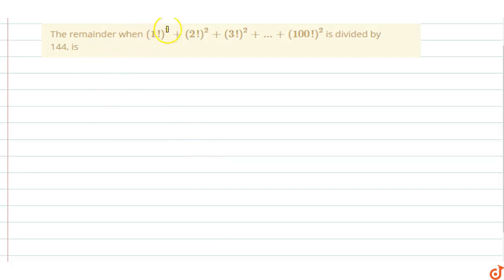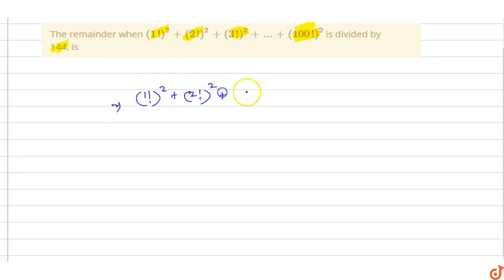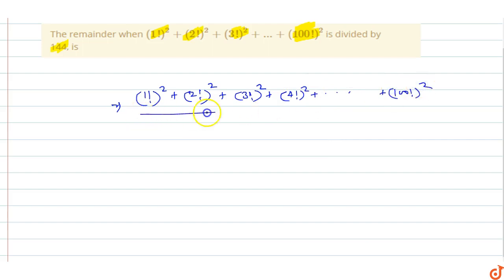In this question we have to find the remainder when 1 factorial whole square plus 2 factorial whole square plus 3 factorial whole square, up to 100 factorial whole square, is divided by 144. So this means 1 factorial whole square plus 2 factorial square plus 3 factorial square plus 4 factorial square, up to 100 factorial square, divided by 144.